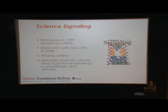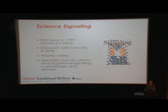We have six journals in the science family. Science is one; another is Science Signaling. This is our specialty journal focused on mechanism, interested in signaling and physiology and health and disease, animal and human. This was relaunched in 2008 and is provided online weekly.